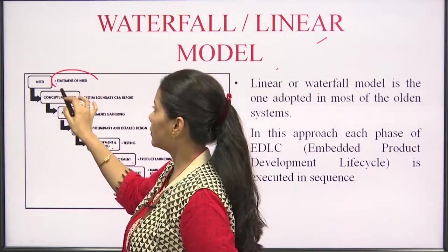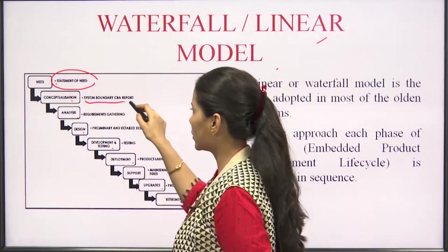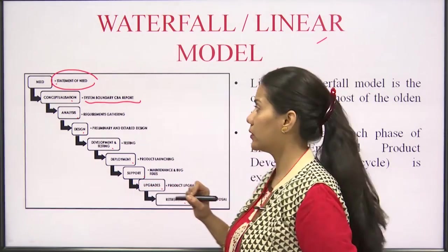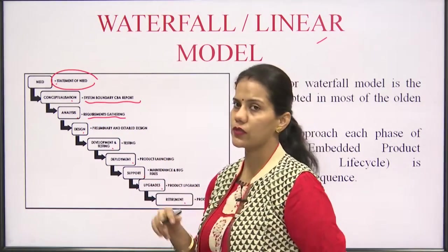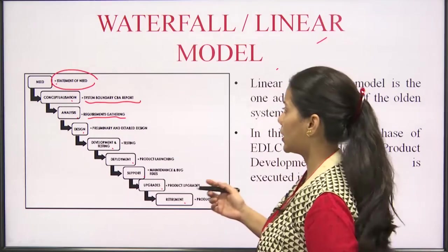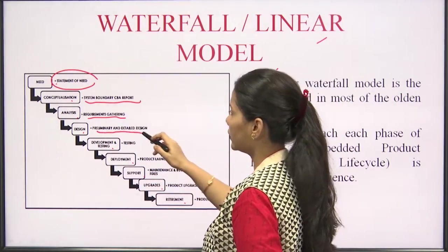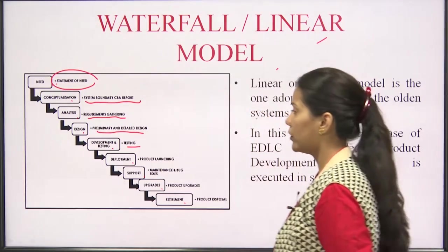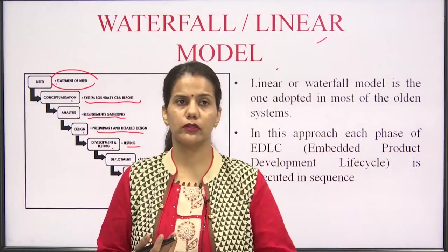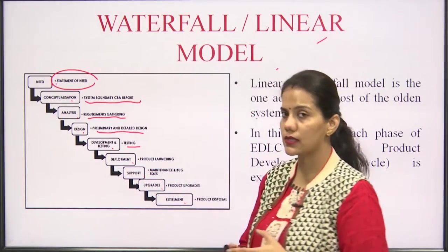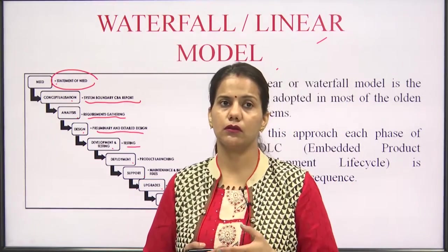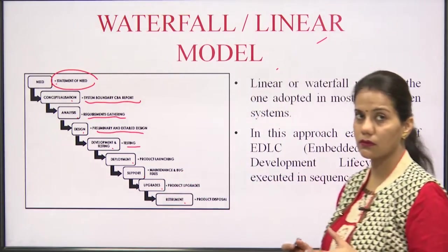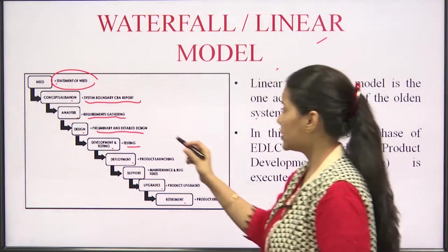In the need phase, the statement of need is defined. During conceptualization, the system boundary — including the cost-benefit analysis report — is determined. In analysis, all types of requirements (functional and non-functional) are gathered. In the design phase, preliminary and detailed designs are finalized and documented. In testing, the product is developed according to the design, and unit testing, integration testing, module testing, and user testing are all performed.